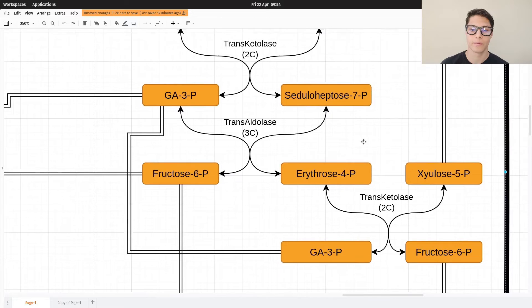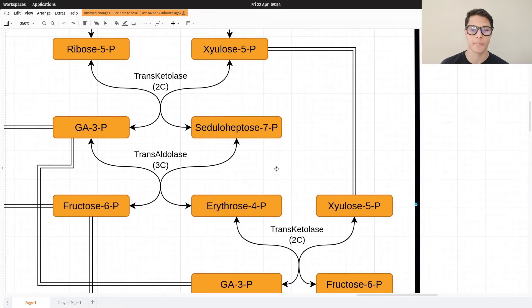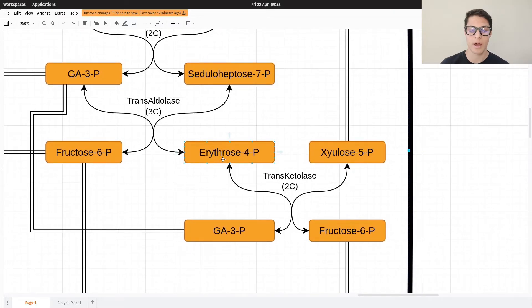And now something pretty cool happens. As you can see, xylulose 5-phosphate can bind to erythrose 4-phosphate via transketolase again. This will create glyceraldehyde 3-phosphate and fructose 6-phosphate.